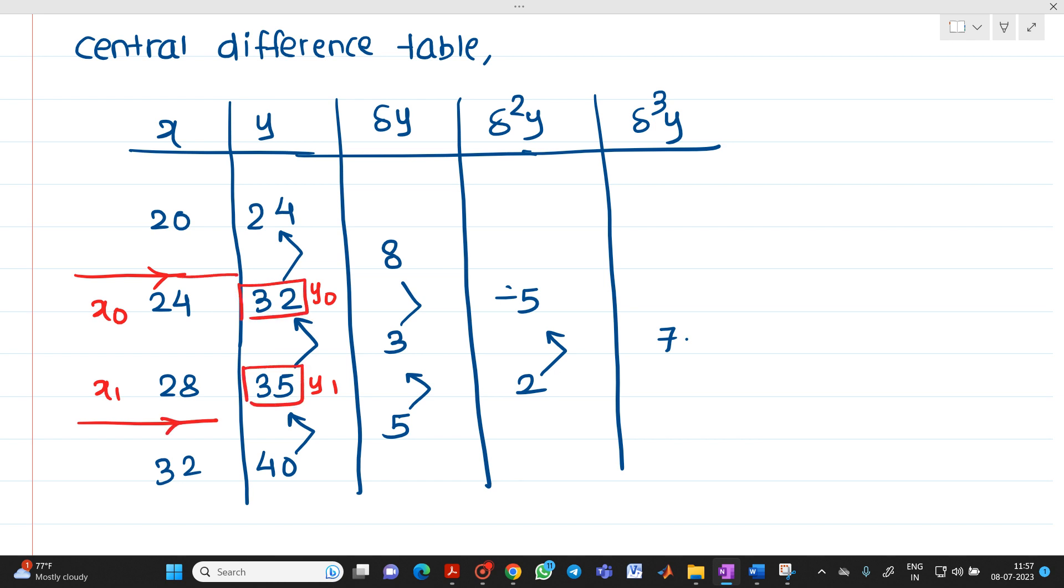Then we have to take this value. This value will be equal to Δy₁/₂. This will be Δy₁/₂. Then these two values, this will be your Δ²y₀ and Δ²y₁. And this value, which is nothing but Δ³y₁/₂.